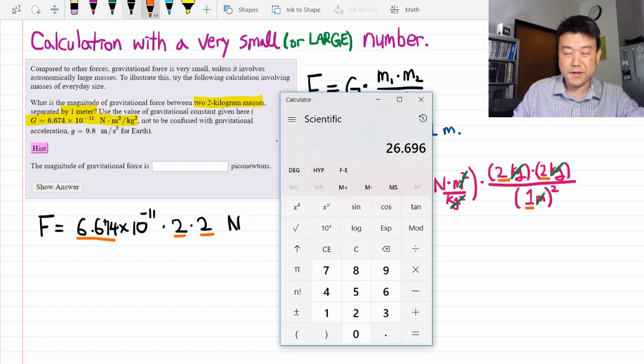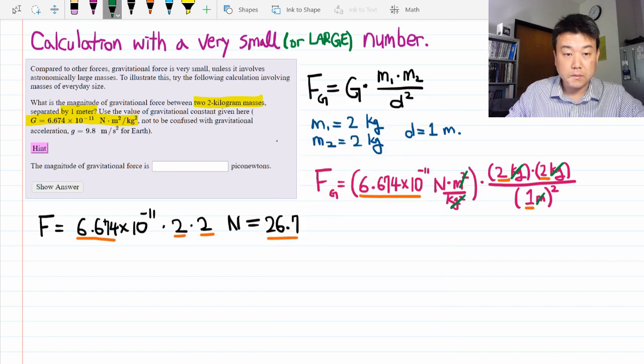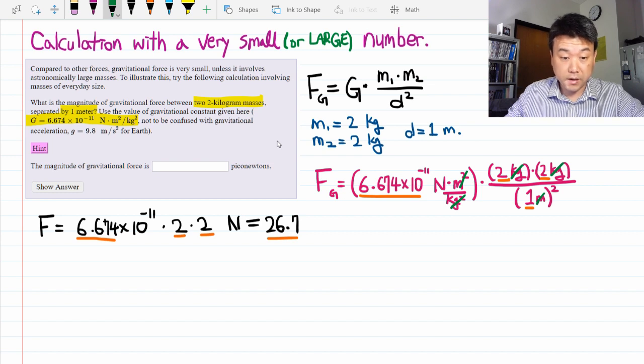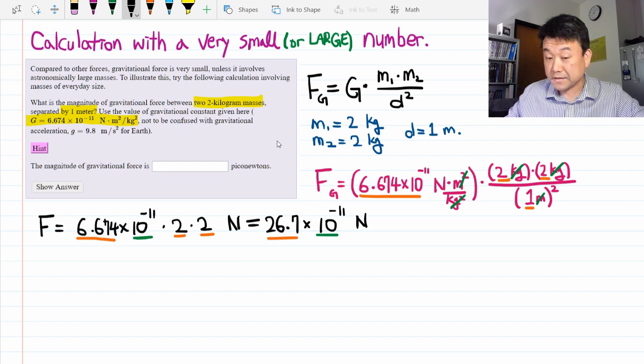So this is 6.674 times 2 times 2 is equal to 26.7. I don't want to carry so many significant figures. All right, we're not quite done. We need to take care of the power of 10. So I have only one power of 10. And that's it.